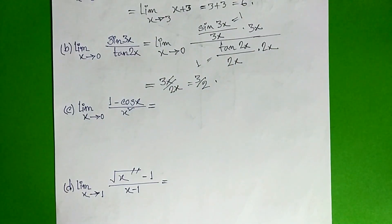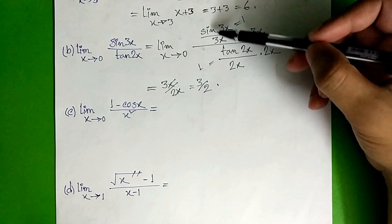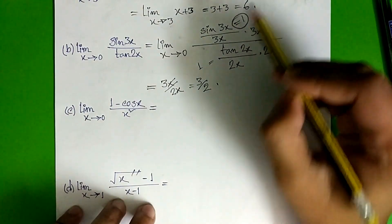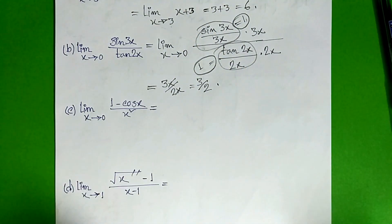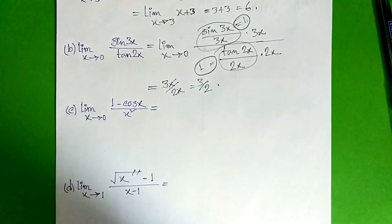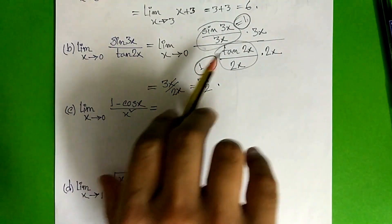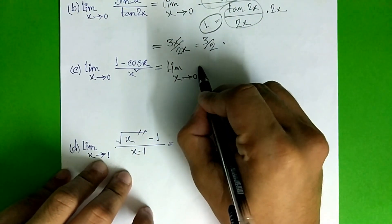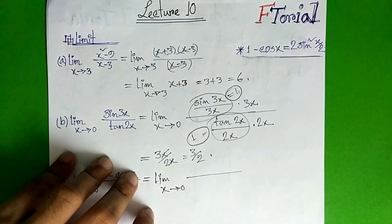So our limit for the second example: sin(3x) divided by 3x — this is equal to 1, using the standard result. So sin(3x) by 3x equals 1. It is the basic result that as x approaches 0, sin(x)/x equals 1. So for example 2, applying this standard limit gives us the answer.